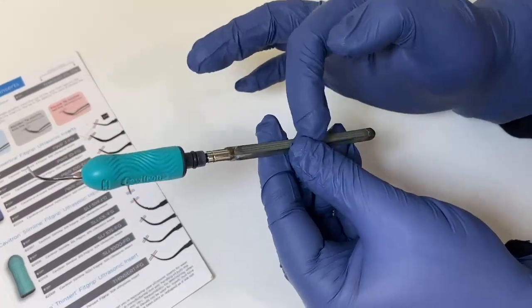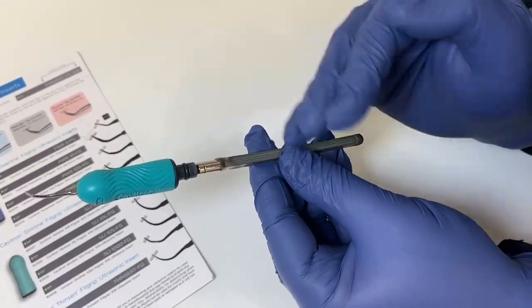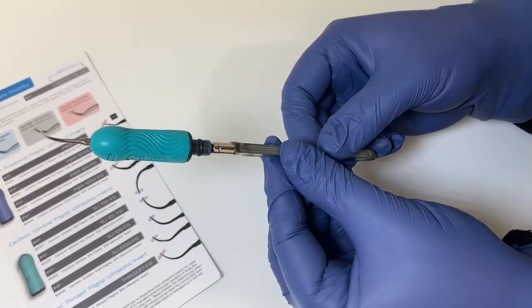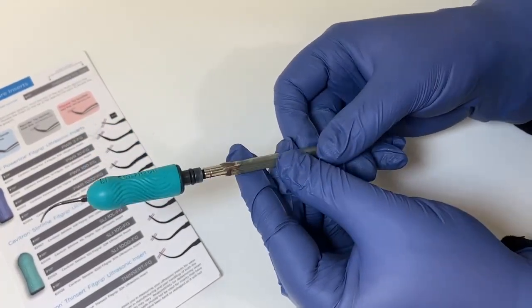So if these stacks get bent, they won't hit correctly, and then your tip won't move correctly. So make sure you just be really gentle with your stacks. Don't pull them apart. Be careful they don't bend, or else it won't work anymore.